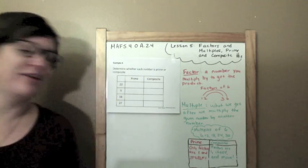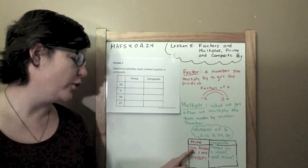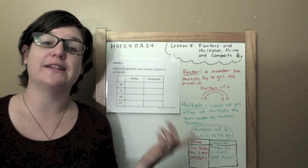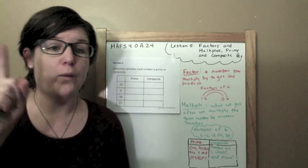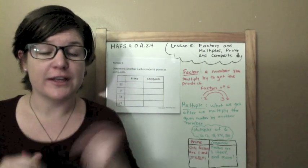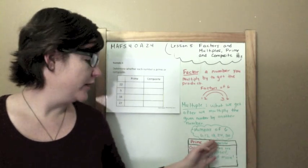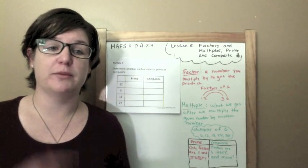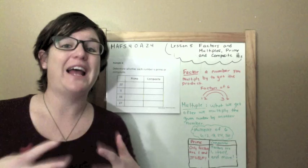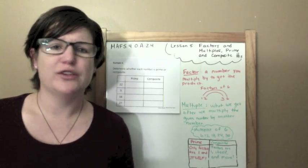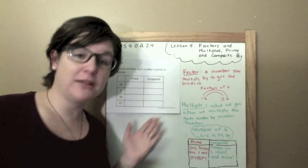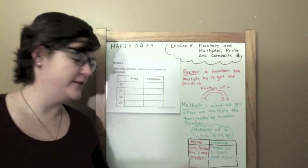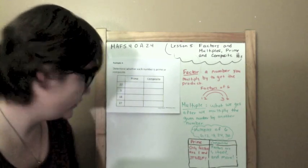So we have Prime, which means that their only factors are 1 and itself. So just remember, 1 and itself is Prime. Composite, the factors could be 1, itself, but it has to have more factors. So what does that mean? Well, let's apply this concept, this information right now over here.